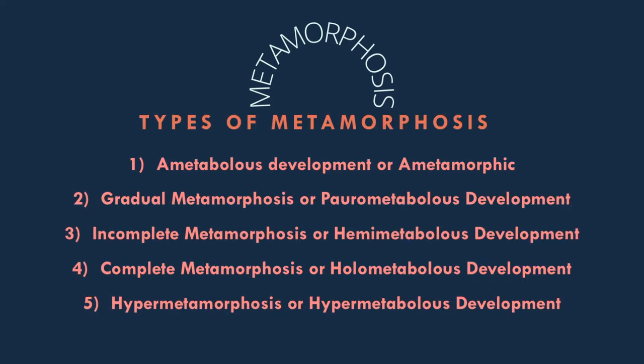On the basis of the degree of changes, there are five basic types of metamorphosis: the ametabolous development or ametamorphic; the gradual metamorphosis or parometabolous development; third, the incomplete metamorphosis or hemi-metabolous development; fourth, the complete metamorphosis or holometabolous development; and fifth, the hypermetamorphosis or hypermetabolous development.